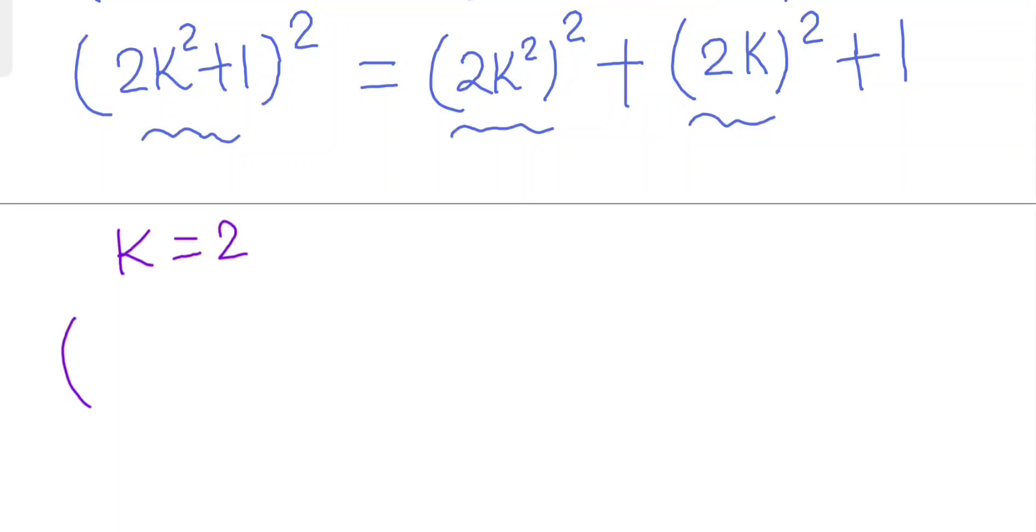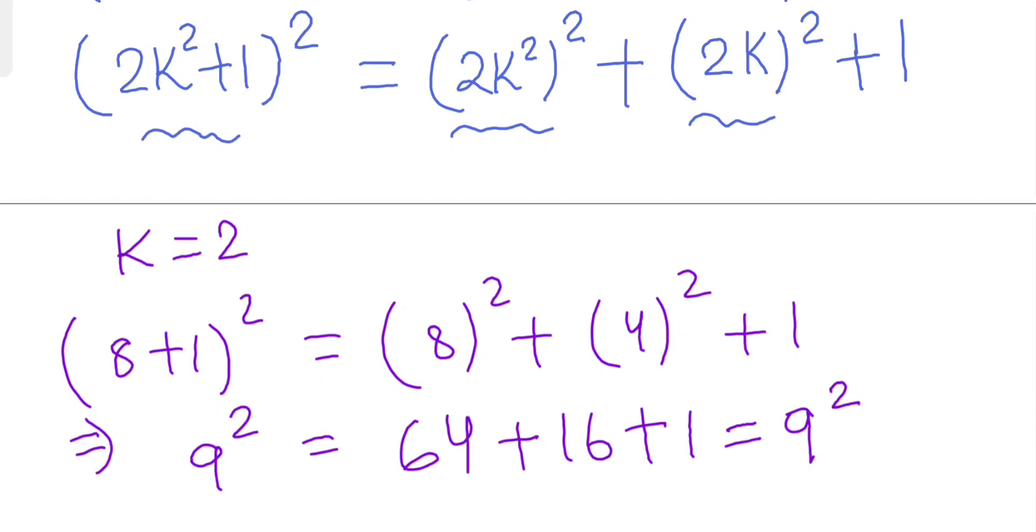2k² becomes 8, so (8+1)² whole squared, and here 2k² becomes 8² plus 2k becomes 4² plus 1. So yes, this formula is working perfectly.